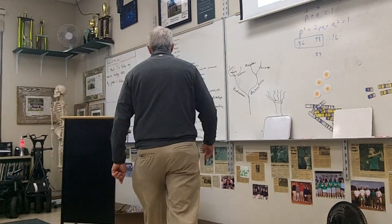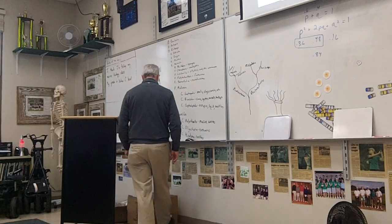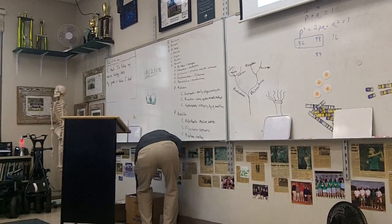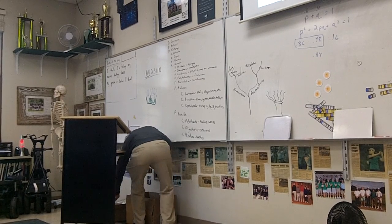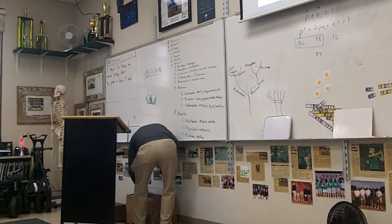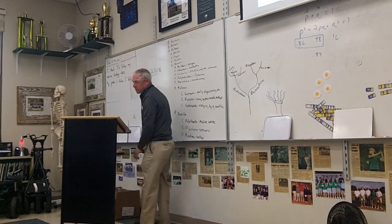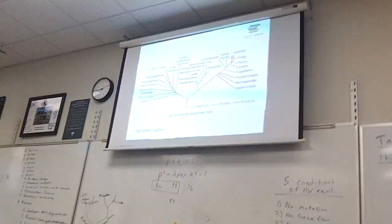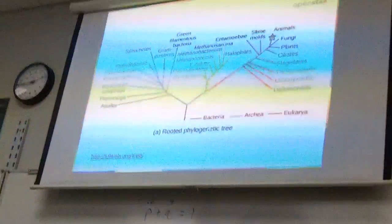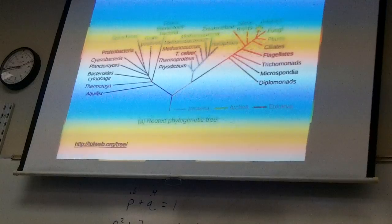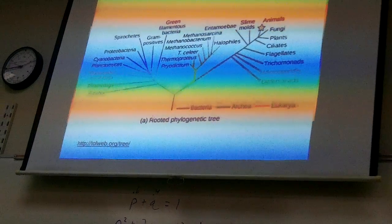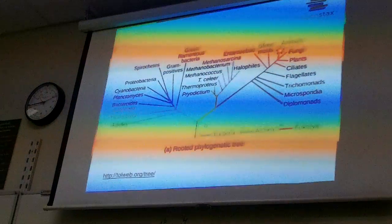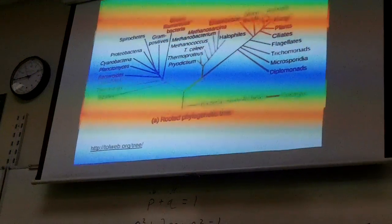We're going to start learning about evolutionary trees. This is an evolutionary tree called a rooted phylogenetic tree. This is Chapter 20, if you are following along. A rooted phylogenetic tree looks like an actual tree.